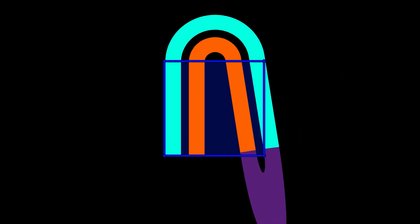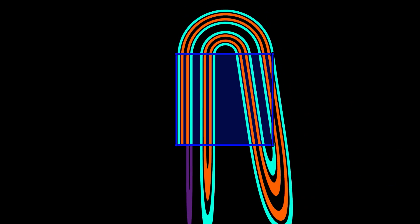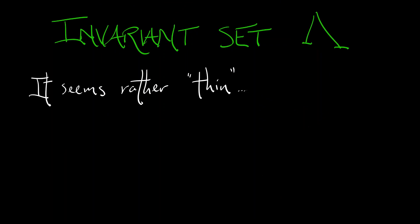If we focus on that invariant set for the Horseshoe map, we called it Lambda, it seems like a rather thin set. Remember what we were doing where we're taking iterates of the map forward again and again and the inverse again and again. All that folding, stretching, folding, stretching, and we're taking the intersection of all these things. What's left over seems like is not that much there. It seems thin. What is actually left over after this infinite process of intersection? What kind of set is this?